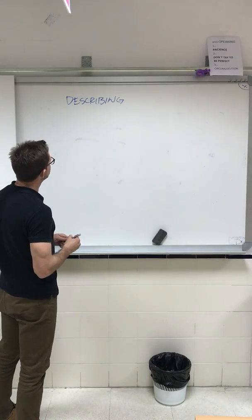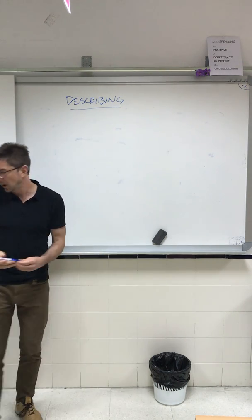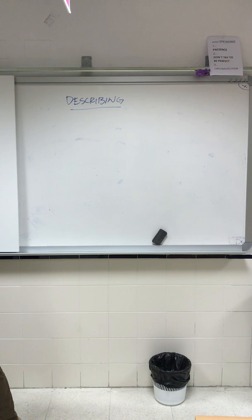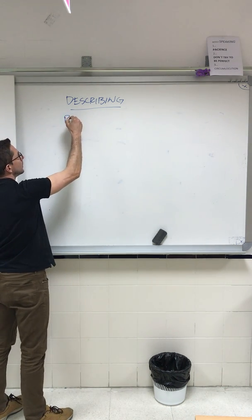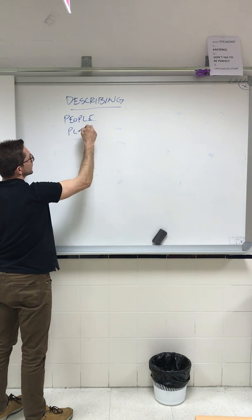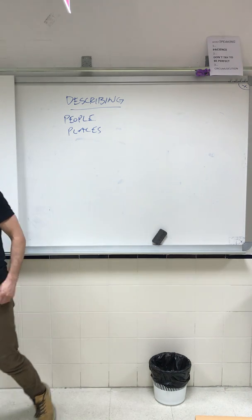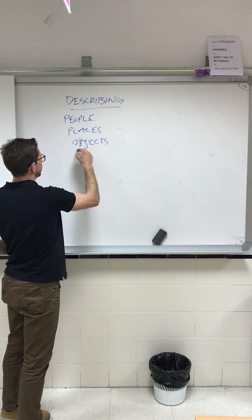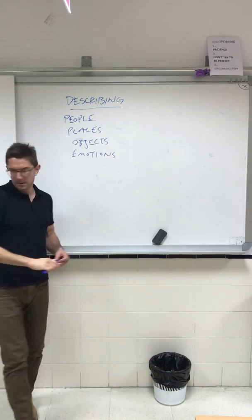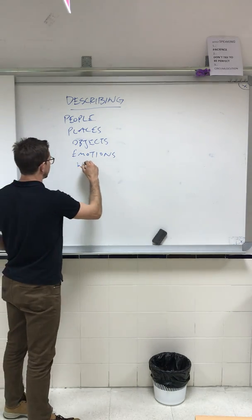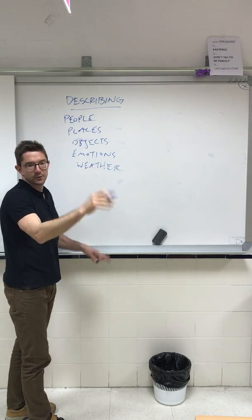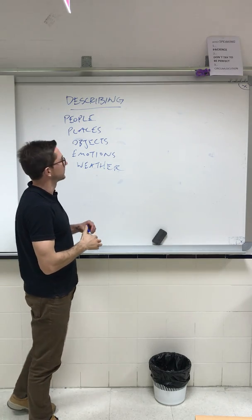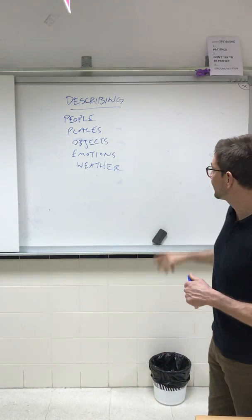And so what I want to do first is talk about common things that we need to describe. So let's think about this. We often describe people. What else do we describe? Maybe places? Themes? We often describe objects, emotions, and weather. There are many others, of course. There's sports, entertainment, politics, millions of things. But we'll just focus on these for now.